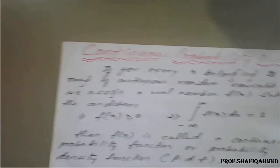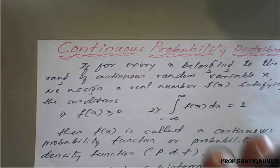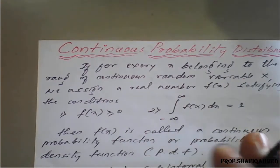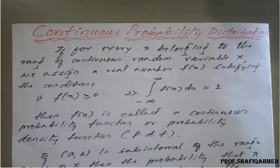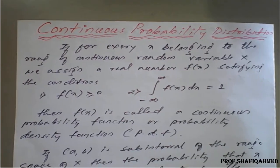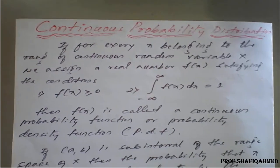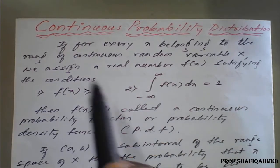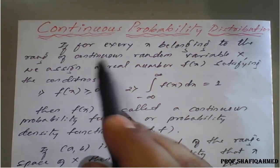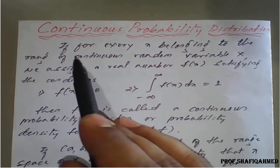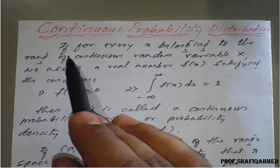Now we will see what is continuous probability distribution with examples. We know that continuous probability distribution involves an infinite number of experiments or trials. I have already told what is the definition of a continuous discrete variable.